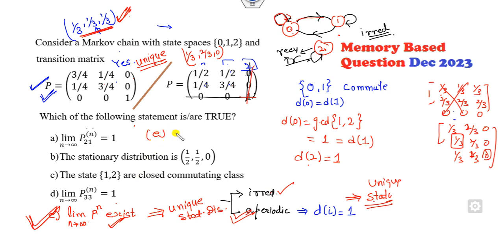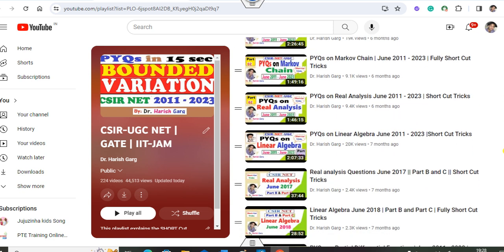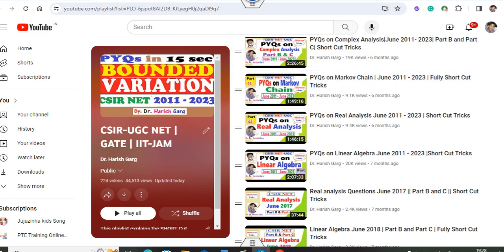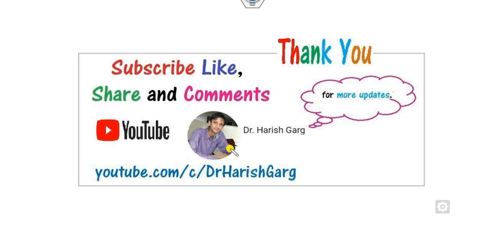If they are asking about the period of a certain state, you can check that accordingly to find the correct option. Since this is a memory-based question, we can't say exactly which one is the right or wrong option. If the states are 0 and 1, then these are the correct options. If instead of 1/2, 1/2, 0 it is 1/3, 2/3, 0, then that is the right option. That is why I have discussed the complete procedure. If you want more detail on Markov chain, I recommend watching my previous PYQ series — June 2011 and one more Markov chain lecture — which are available with complete shortcut tricks. You can join my WhatsApp group. Please like, share, and comment on the video. Best of luck students, happy learning.